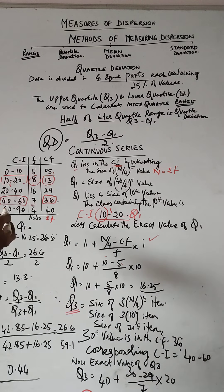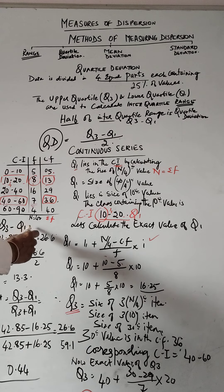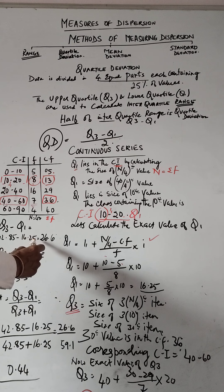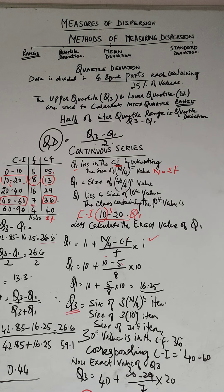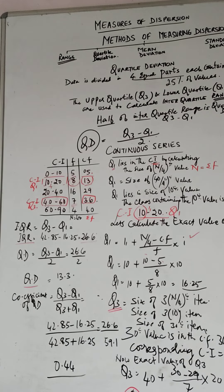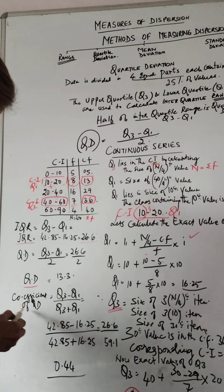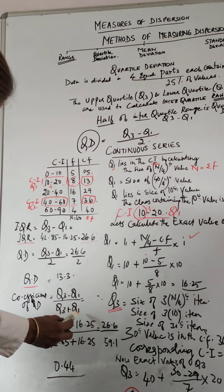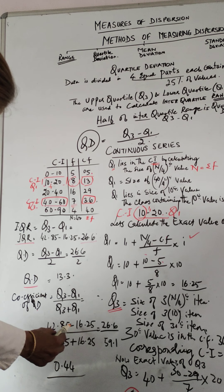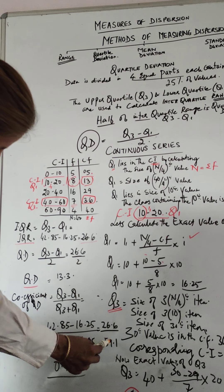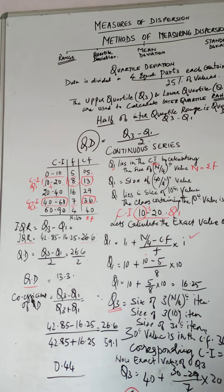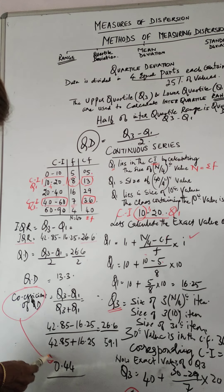If you want to find the interquartile range, it is Q3 minus Q1: 42.85 minus 16.25 equals 26.6. That is interquartile range. Interquartile range divided by 2, that is 26.6 divided by 2, quartile deviation equals 13.3. The coefficient of quartile deviation is Q3 minus Q1 divided by Q3 plus Q1, which equals 42.85 minus 16.25 divided by 42.85 plus 16.25, equals 26.6 divided by 59.1. The coefficient is 0.44.